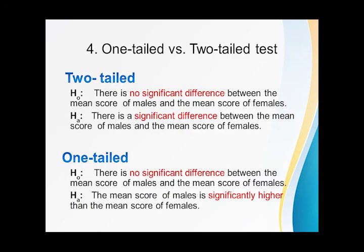Another example: two-tailed. Null hypothesis: there is no significant difference between the mean score of males and the mean score of females. And for one-tailed test, H₀: there is no significant difference between the mean scores of males and the mean scores of females. Hₐ: the mean score of males is significantly higher than the mean score of females.